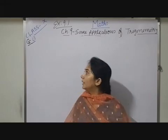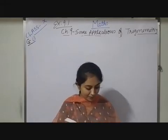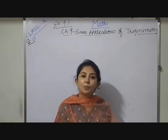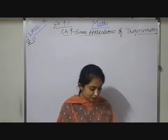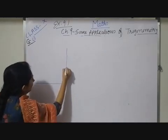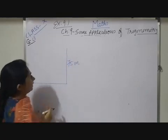Now, here I am explaining 13th question of our exercise. Your question is, as observed from the top of 75 meter tall lighthouse, right here it is around, somewhere here, lighthouse is there and its height is given 75 meter.